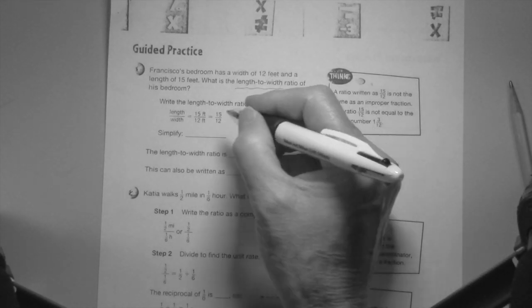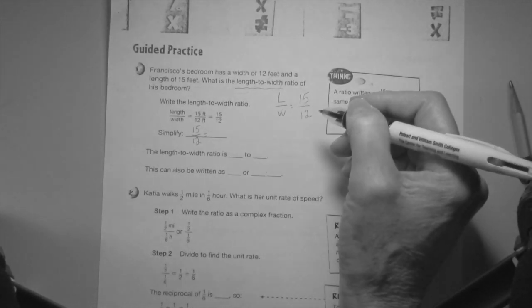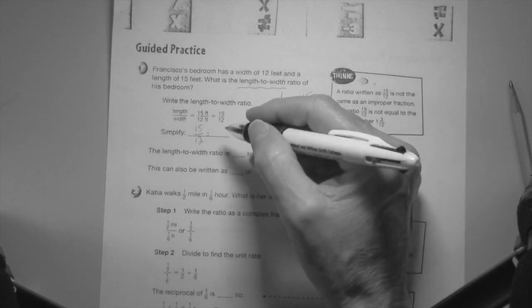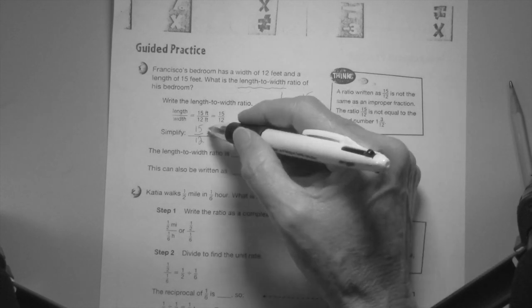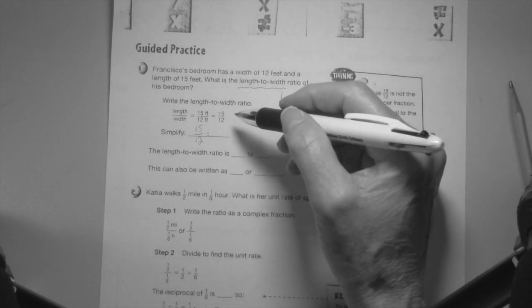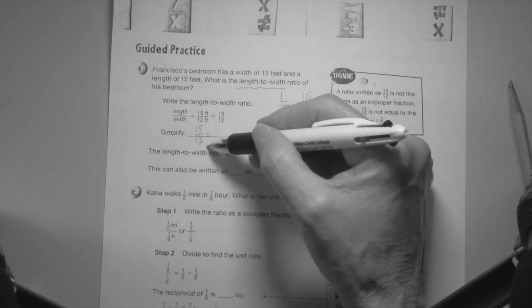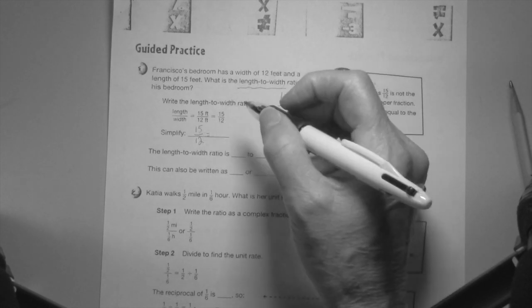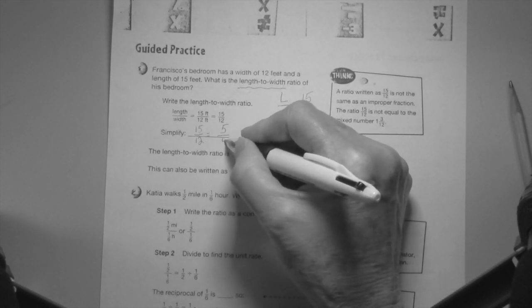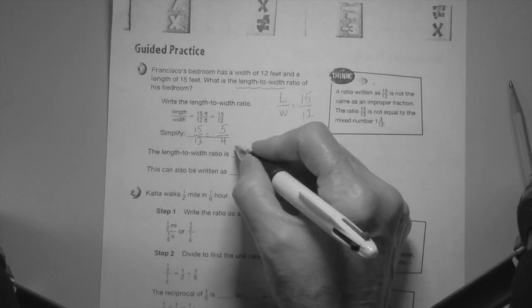Simplify. So 15 over 12, do not make it a mixed number, just simplify by common factors. The common factor between these two is three. What number goes into 15 and goes into 12? Three. How many threes are in 15? Five. How many threes are in 12? Four. So the length to width ratio is 5 to 4.